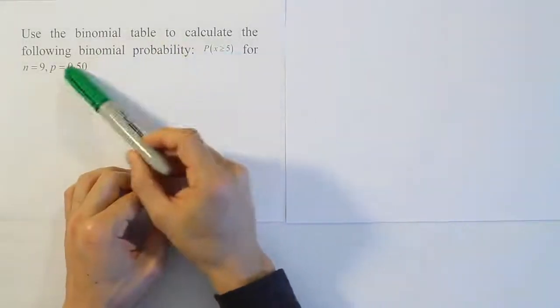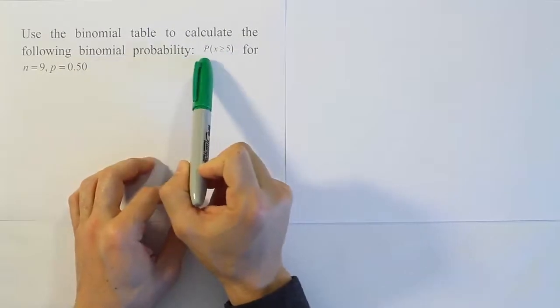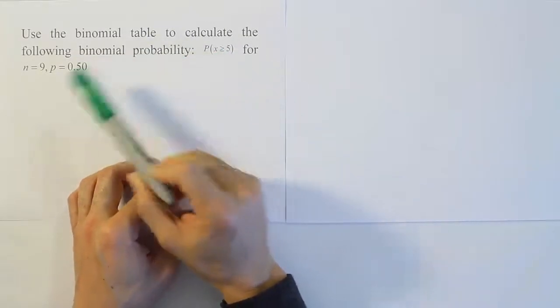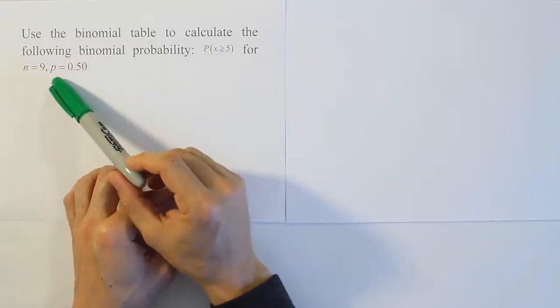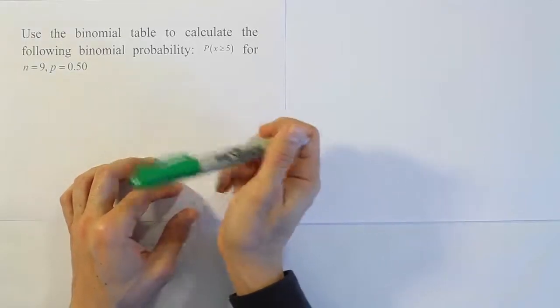Use the binomial table to calculate the following binomial probability: the probability that x is greater than or equal to 5 for n equals 9 and the probability of success is 0.50.